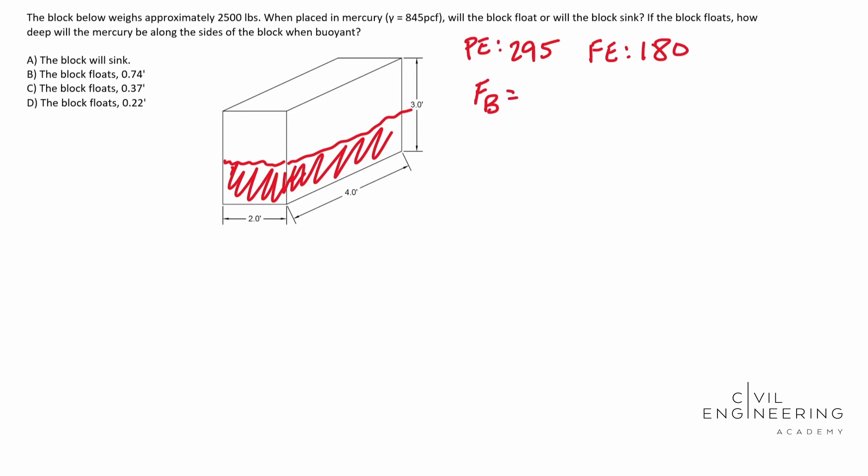the force of buoyancy is equal to, or the force of the block required is equal to your gamma times your volume of fluid displaced. So basically, this block is going to have a force that acts on the fluid. And so if that force is equal to the volume displaced times the specific weight of that fluid, then it's buoyant. So hopefully that makes sense there.